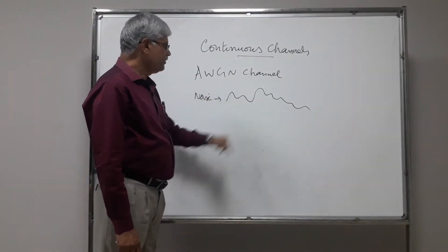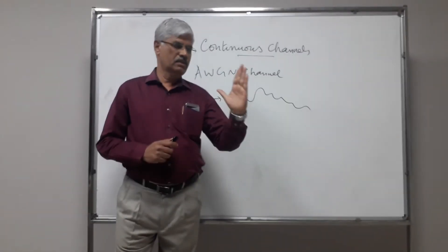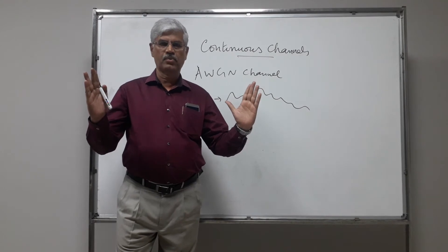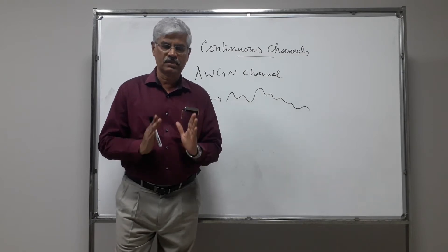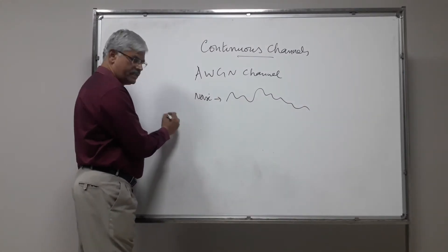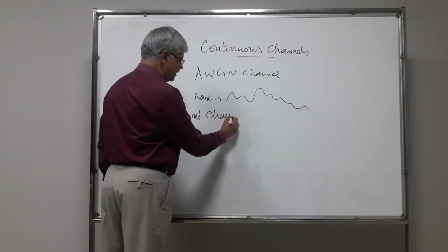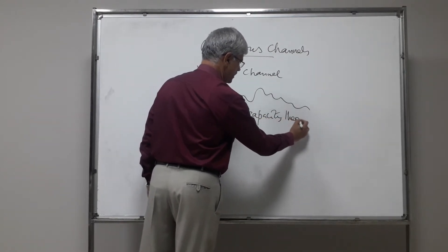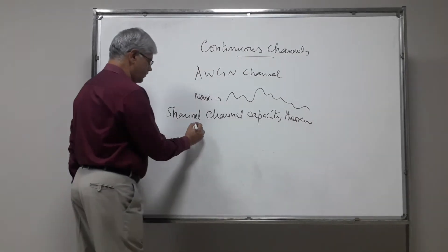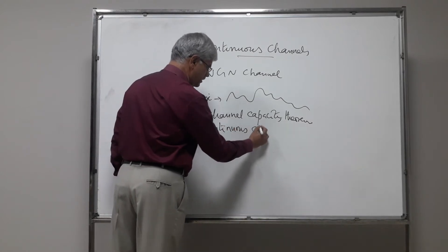So for a continuous channel, if one analyzes, one finds the entropy of the source input and the entropy at the output of the source, and then one works out the transition probability. And ultimately, if one decides channel capacity, the Shannon's channel capacity theorem, Shannon's capacity theorem for continuous channel...